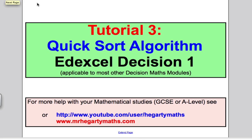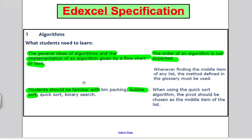Firstly, let's take a look at what Edexcel tell us we need to know about the quicksort. In green is what we've done already - we've done what algorithms are and what the bubble sort is. Now we're moving on to the quicksort. A key bit of information from the specification from Edexcel says when using the quicksort algorithm, the pivot should be chosen as the middle item of the list.